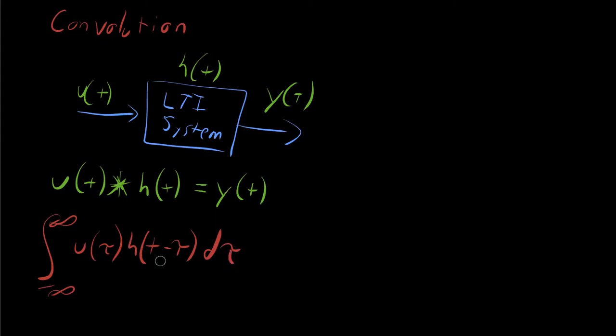And it doesn't matter which of these two we pick to reverse and switch. We can pick u of t and switch that one and leave h of t in terms of just h of tau, and that would be the same thing. Now, the question you might be asking is, why on earth are we reversing and negating these things? What's going on that we're flipping this one around? Why is it negative tau and not just positive tau? Well, you have to think about what it means to pass a signal, an input signal, through a system and to get an output.